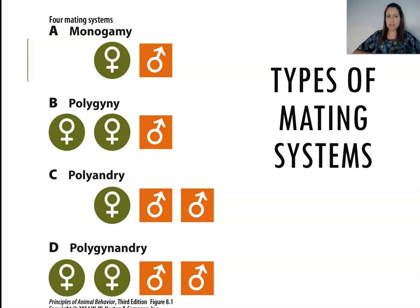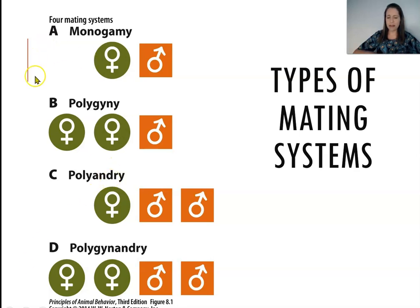One thing to think about is we can't just describe each taxon and say all insects, all primates, all birds, or all fish reproduce using one particular mating system. We don't see that. Depending on the different taxa there may be some patterns in mating systems, but generally speaking we see examples of all of these different types of mating systems across all the different taxa of animals.